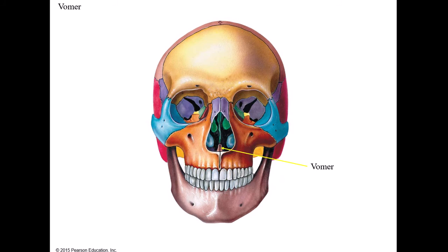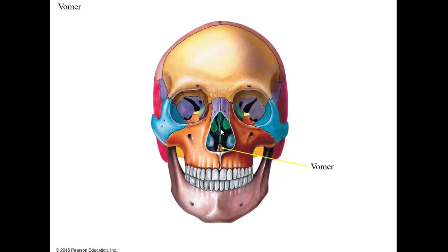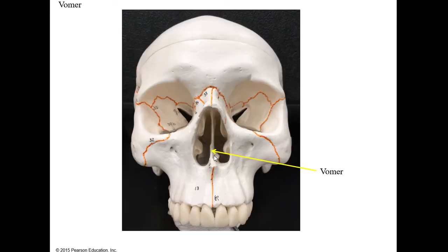The nasal septum is formed by two bones. The upper part is the perpendicular plate, which is part of the ethmoid bone - a cranial bone. The bottom half is formed by the vomer. The vomer is small in front and flares out like a triangle as it goes back. We only have one vomer.